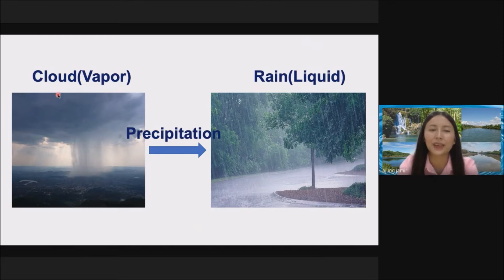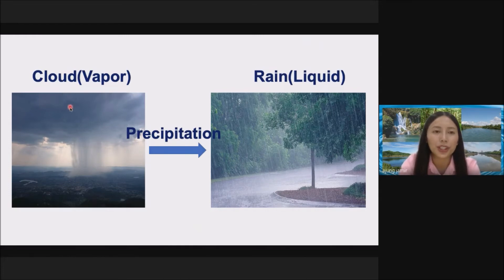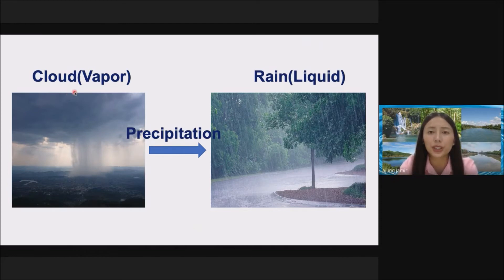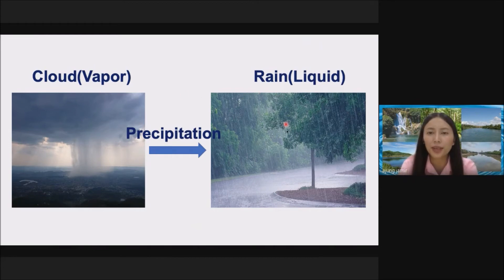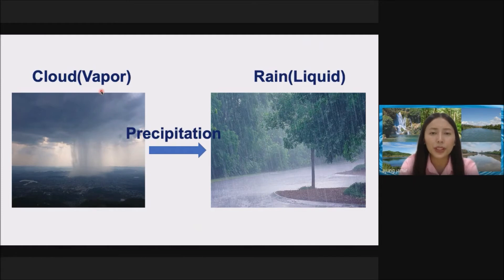Another example: you get a little cloud. You have all seen the cycle of rain, right? So after evaporation, when the cloud gets heavy, it turns into droplets and comes down as rain. That process is called precipitation. That's how we can see vapor turning into liquid in the form of rain.